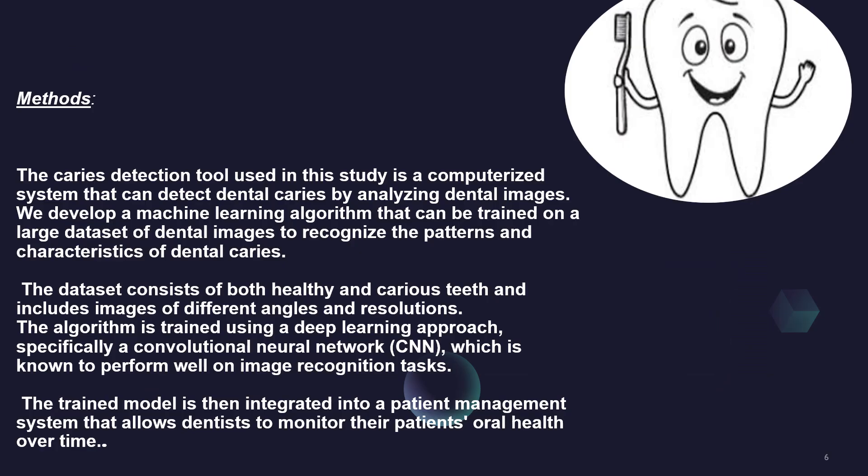The methods used: the caries detection tool is a computerized system that detects dental caries by analyzing dental images. We developed a machine learning algorithm trained on a large dataset of dental images to recognize the patterns and characteristics of dental caries. The dataset consists of both healthy and caries-affected teeth, including images from different angles and resolutions. The algorithm was trained using a deep learning approach — specifically a convolutional neural network, known as CNN — which is known to perform well on image recognition tasks.